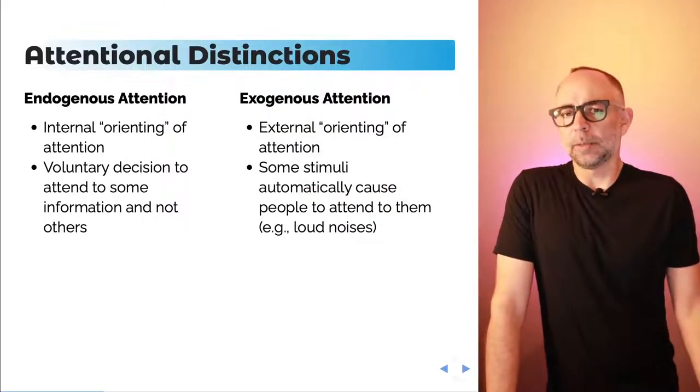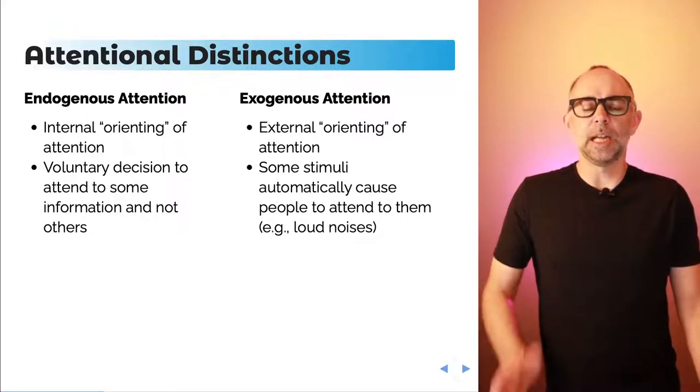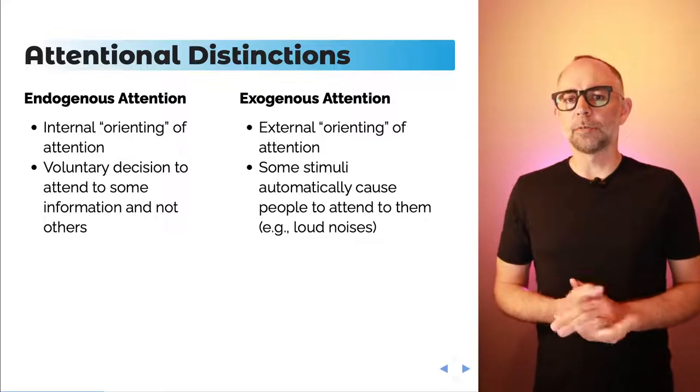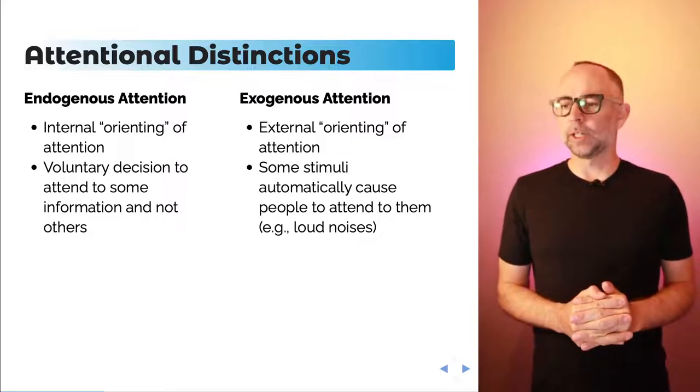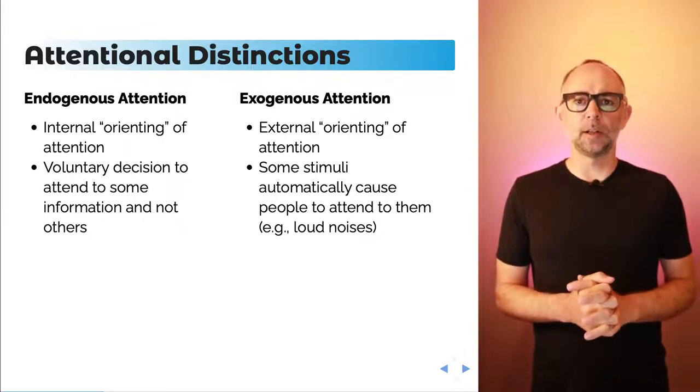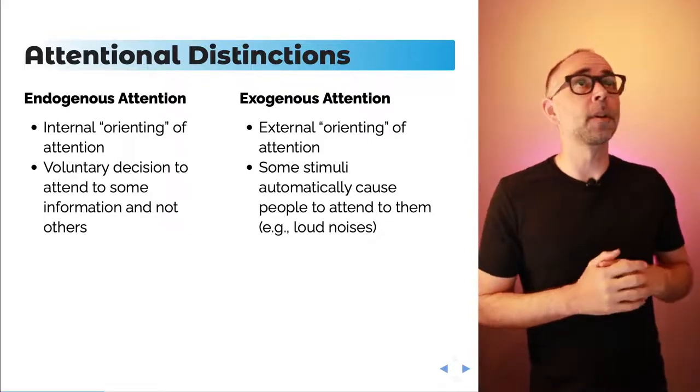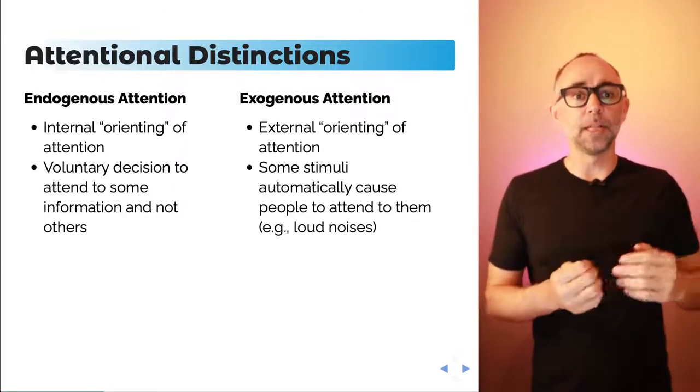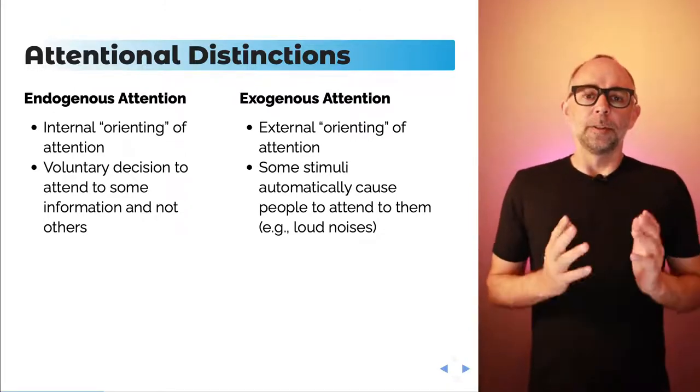Attention researchers commonly make different kinds of distinctions. Here's a major one: the distinction between endogenous attention and exogenous attention. Endogenous refers to internal orienting of attention, or potentially a voluntary decision to attend to some information and not other information. Let's say I want to look up here and see what's going on over there. I told myself I want to do that, and then I did do that, so I willed myself endogenously to look over there and see what's going on.